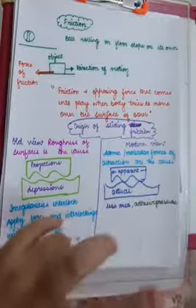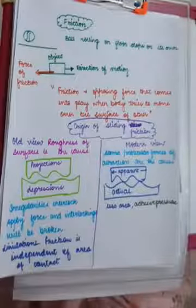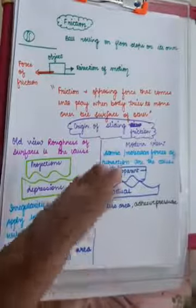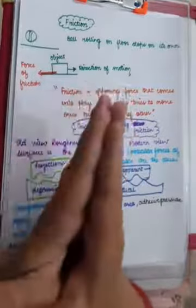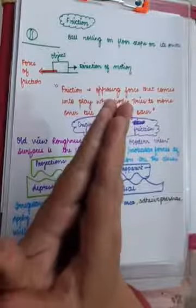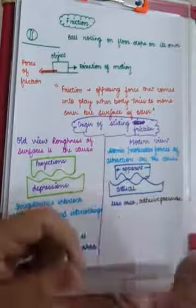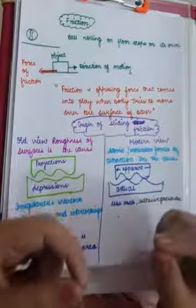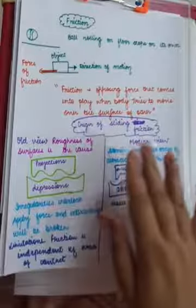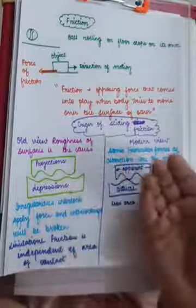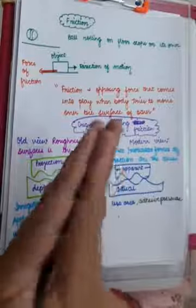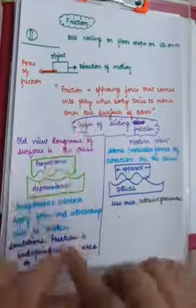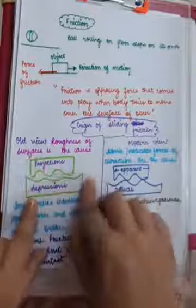Old view of friction says that roughness of surfaces is the cause of friction. We can join our hands together. We think that we are basically overlapping our hands, but there are so many irregularities in the surface. Even when you see the surface through a powerful microscope, you will find that the surface is not as smooth as it looks.